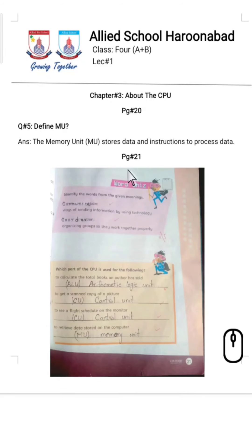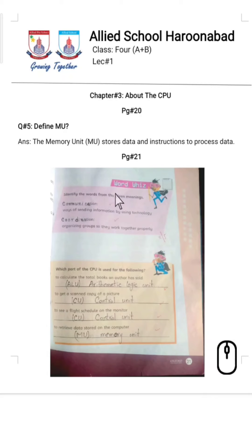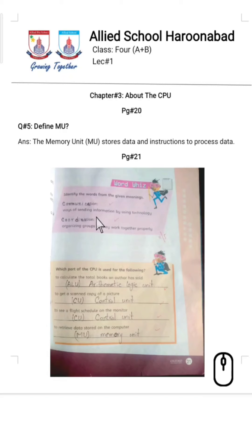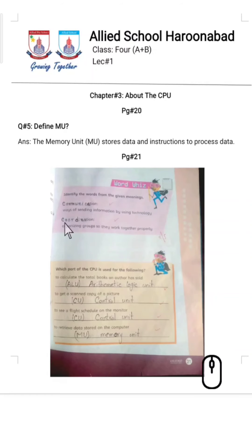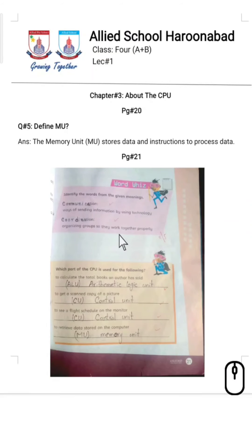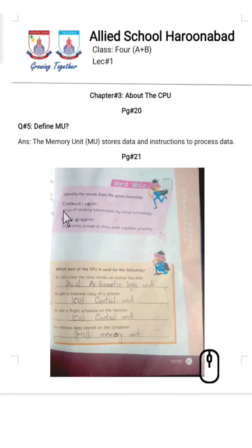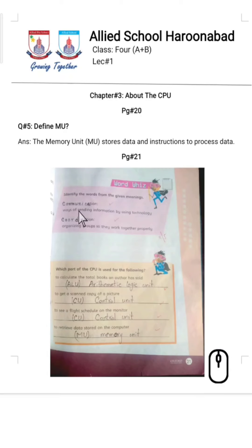Now moving to page 21 of your book. On page 21 there is an activity in which you have to identify the words from the given meanings. You have to read the line and identify the word. When information is being sent from one to another, this is called communication. We will fill this blank with 'communication' — c-o-m-m-u-n-i-c-a-t-i-o-n.